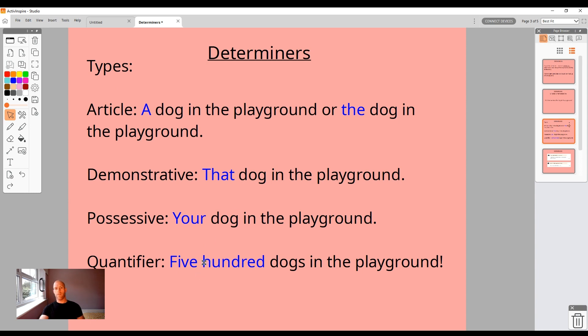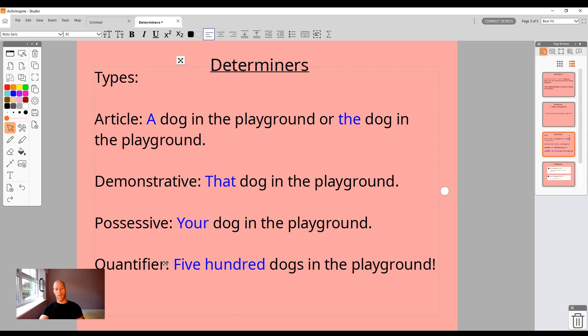Finally, moving from exciting into worrying: 500 dogs in the playground. We can have a quantifier talking about the number of a noun. Obviously the noun itself doesn't matter, but you can see how the determiner only is changing the meaning of the sentence, everything from a dog in the playground to 500 dogs in the playground.